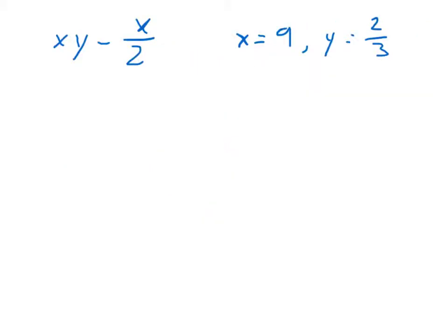Alright, here we begin with example 4. We've got x times y minus x over 2. And you notice over here, we've got x equals 9 and y equals 2 thirds. And we'll see how those parentheses come into play here.